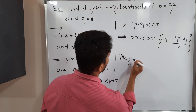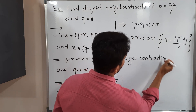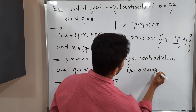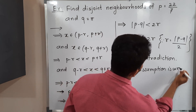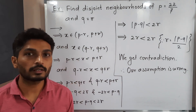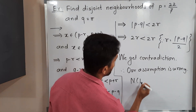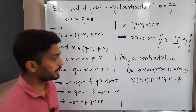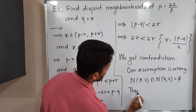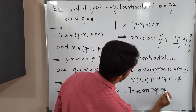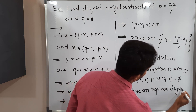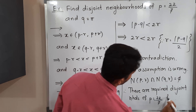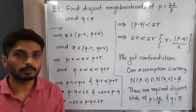We get a contradiction because of our wrong assumption. Therefore our assumption was wrong — the neighborhoods are not non-disjoint. Therefore N(P,R) ∩ N(Q,R) = ∅, meaning these are the required disjoint neighborhoods of P = 22/7 and Q = π. In this way we completed this example.